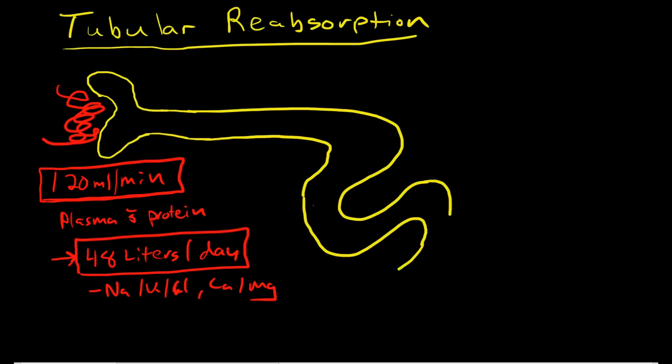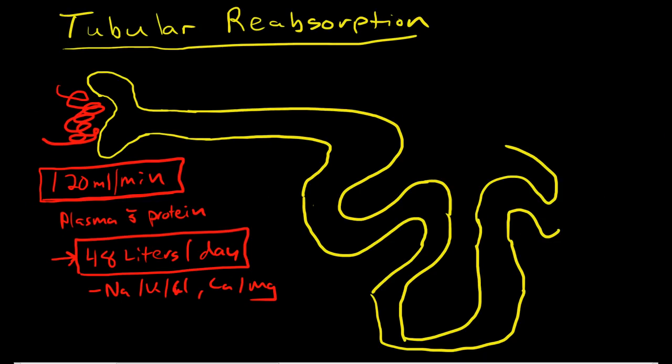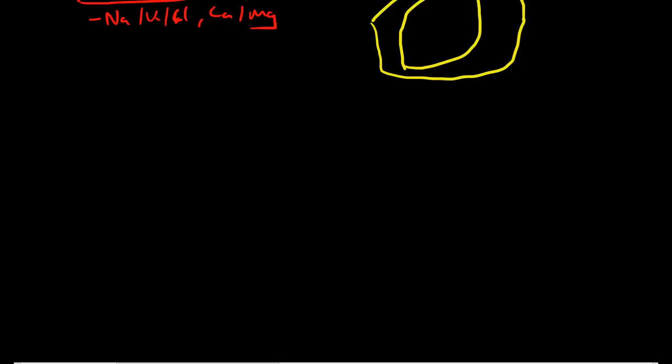Most of this reabsorption occurs in the proximal convoluted tubules. The loop of Henle primarily spends its effort on the concentration of urine, and then there is more reabsorption that occurs in the distal convoluted tubule and very little in the collecting duct. So most of what we're going to be talking about now is occurring in the proximal convoluted tubule and the distal convoluted tubule. I just want you to understand the concept of what's occurring.